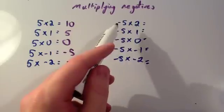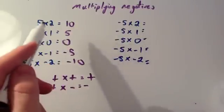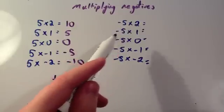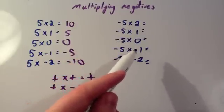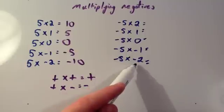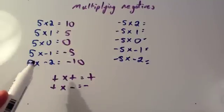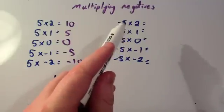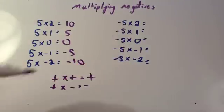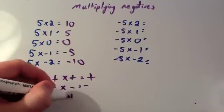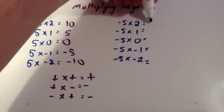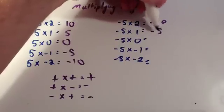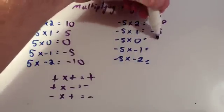Let's look at the other side. This is the same but instead of 5 times 2, 1, 0, minus 1, minus 2, it's minus 5 times 2, minus 5 times 1, minus 5 times 0, minus 5 times minus 1, and minus 5 times minus 2. We've seen that a positive times a negative is a negative. Well, a negative times a positive will also be a negative. So minus 5 times 2 is minus 10, minus 5 times 1 is minus 5, and minus 5 times nothing is nothing.